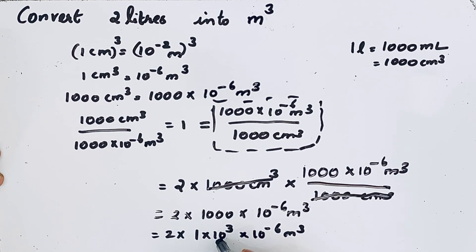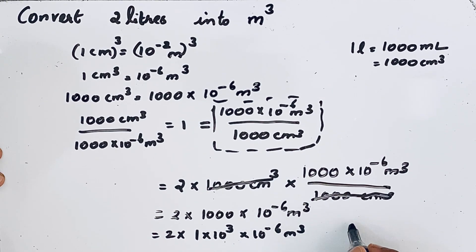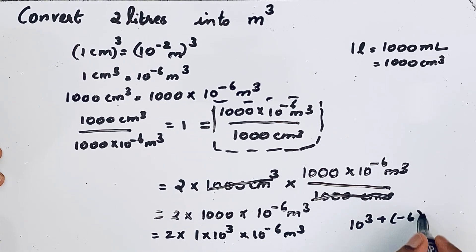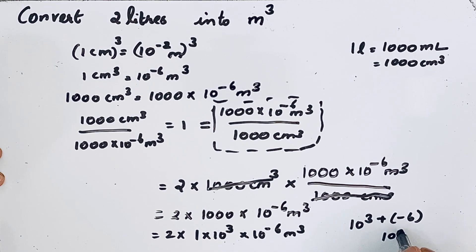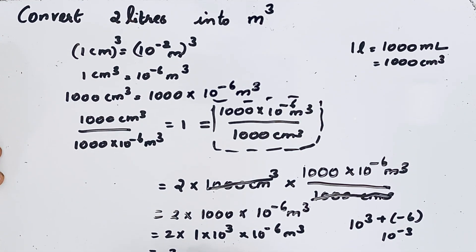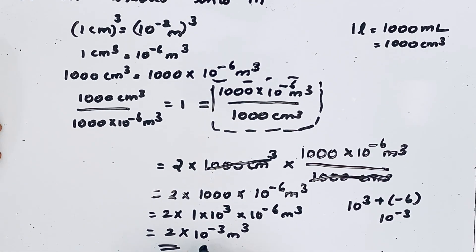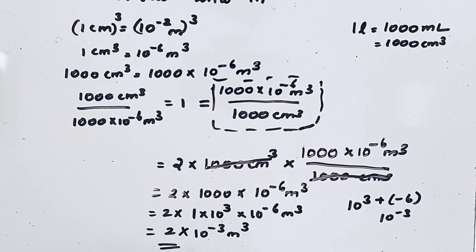So 10³ × 10⁻⁶ = 10^(3 + (−6)) = 10⁻³. The answer is 2 × 10⁻³ meter cube. Therefore, 2 liters is equal to 2 × 10⁻³ meter cube.